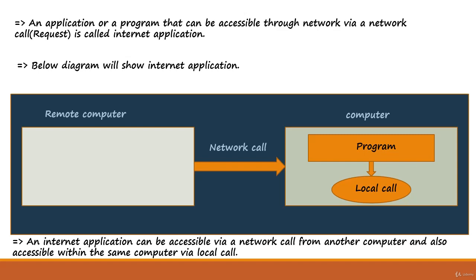An internet application can be accessible via a network call from another computer, and also accessible within the same computer via a local call — that is called an internet application.